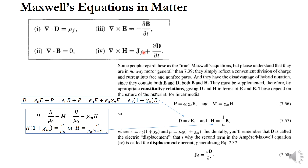Note that epsilon 0 dou E by dou T is the displacement current density — this term is dimensionally equal to a current density, which is why it is called the displacement current density.